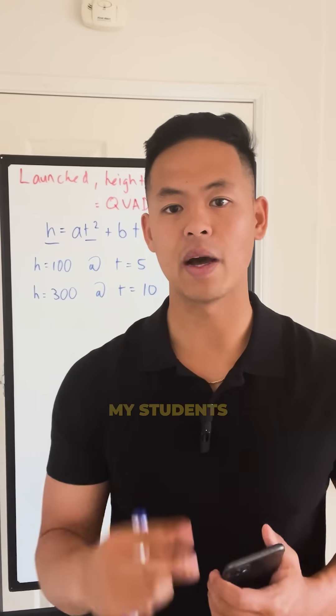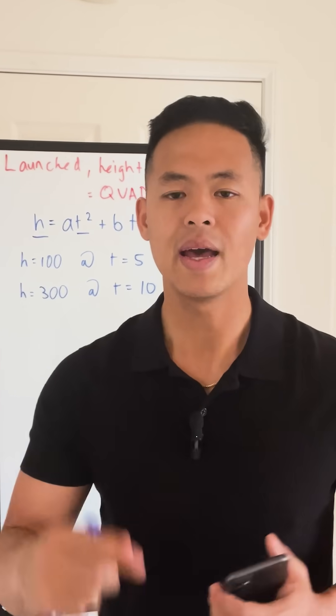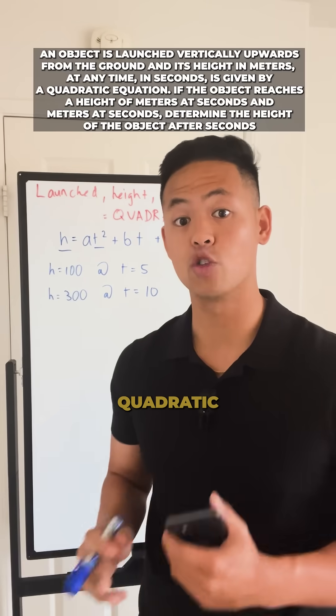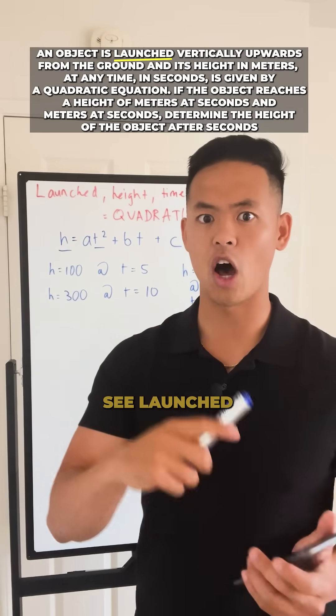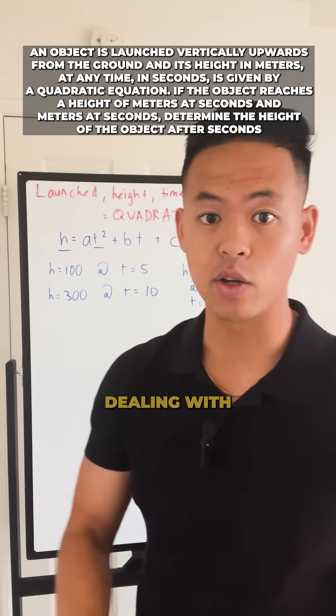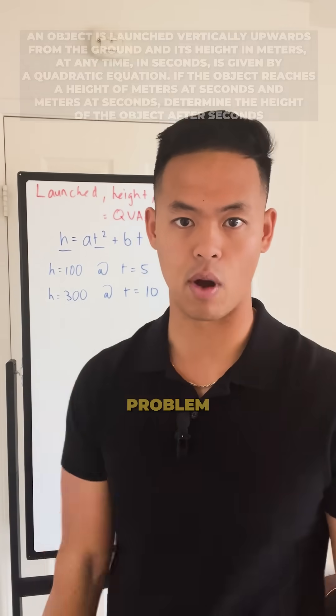This SAT math strategy saves my students precious minutes on the exam, and I don't know why teachers don't teach it this way. We have a typical quadratic problem. Anytime you see launched vertically and it gives you time and height, you are most likely dealing with a quadratic formula problem.